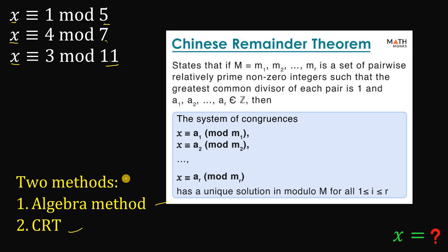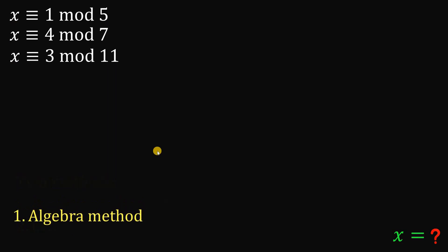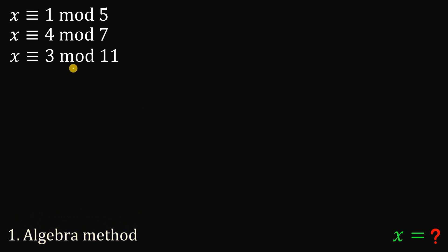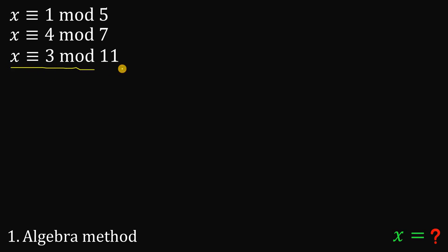Now let's begin with the first method, the algebra approach. I assume that you already know some of the properties of modular arithmetic. Let's use x is congruent to 3 mod 11, because we can rewrite this as x equals 11k plus 3.